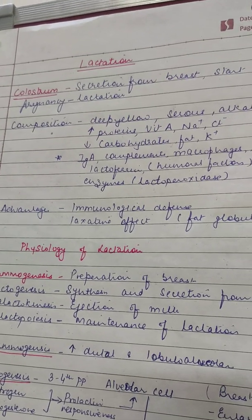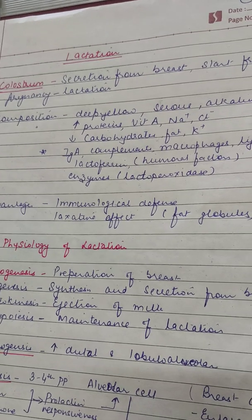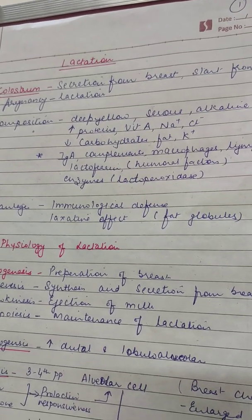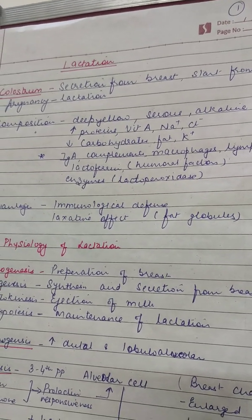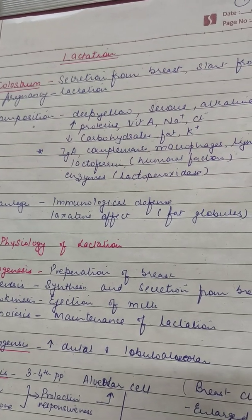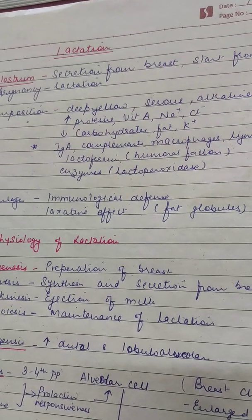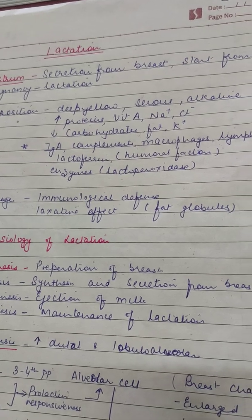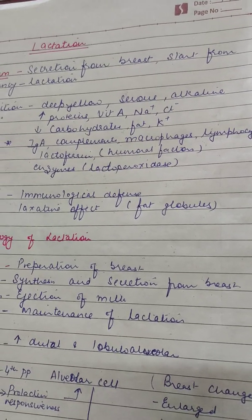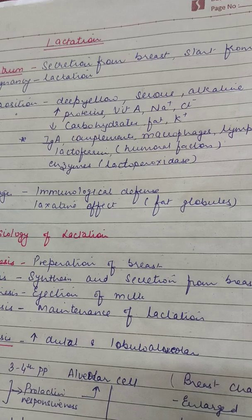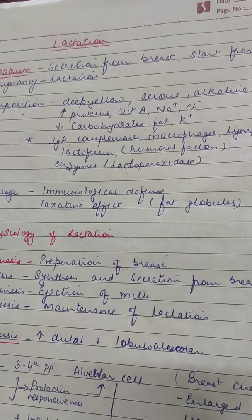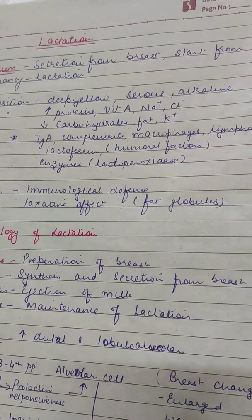Now, the composition of colostrum — it is not like milk but it is a deep yellow, serous, alkaline kind of fluid. Its differences from milk are: it has got more proteins, vitamin A, sodium and chloride. And as compared to breast milk, it has got less carbohydrates, fats and potassium.